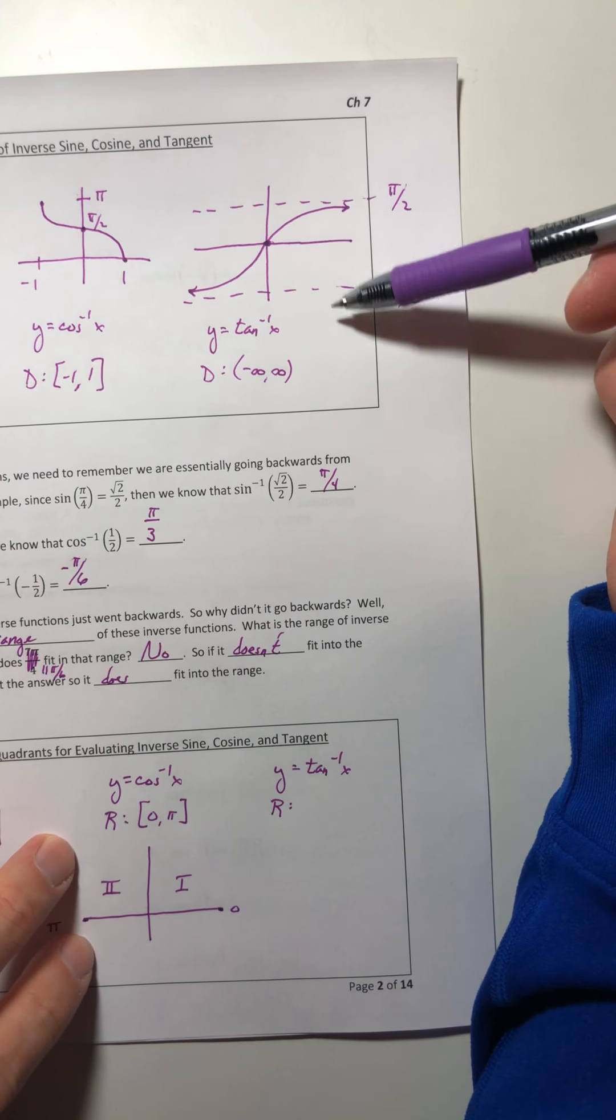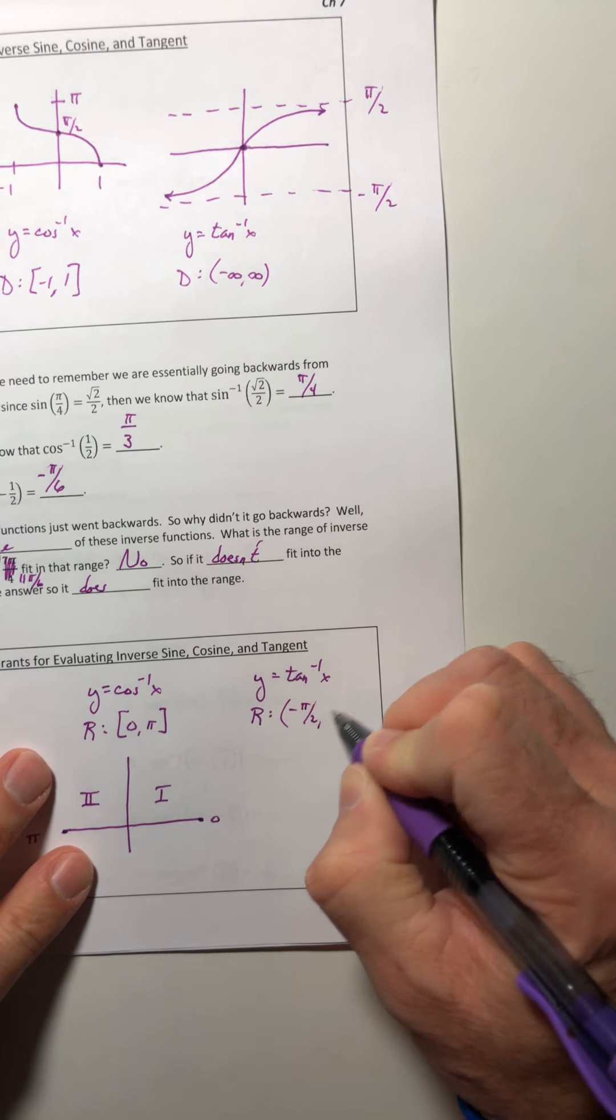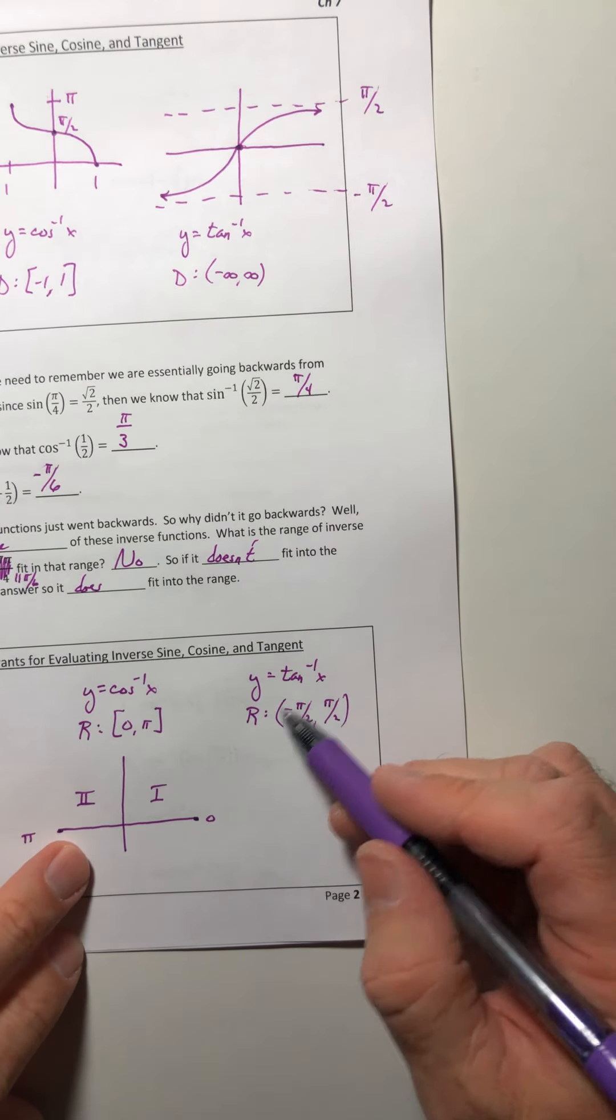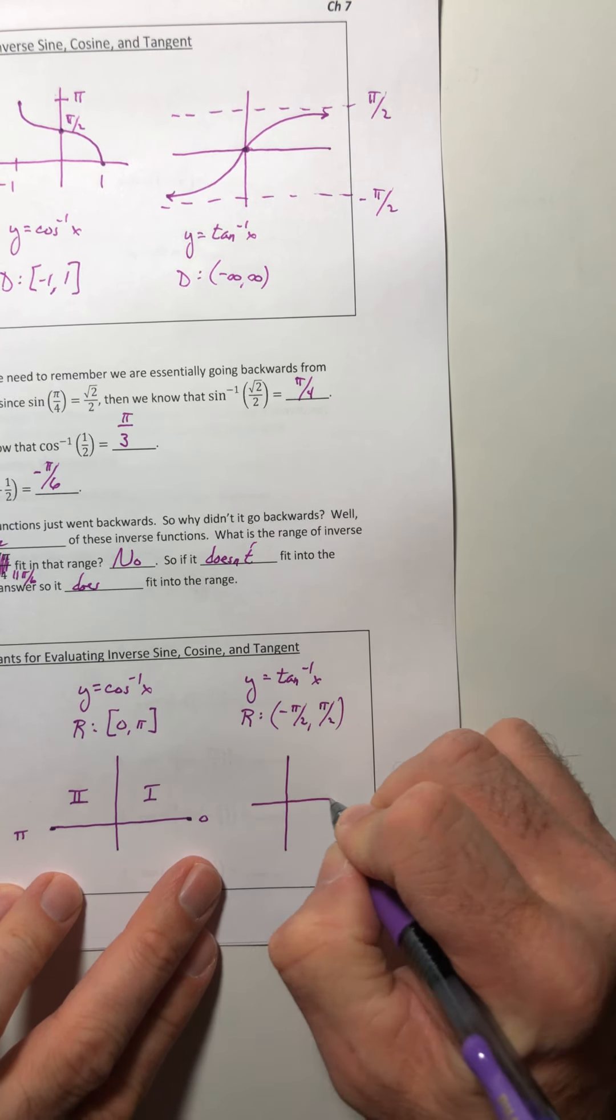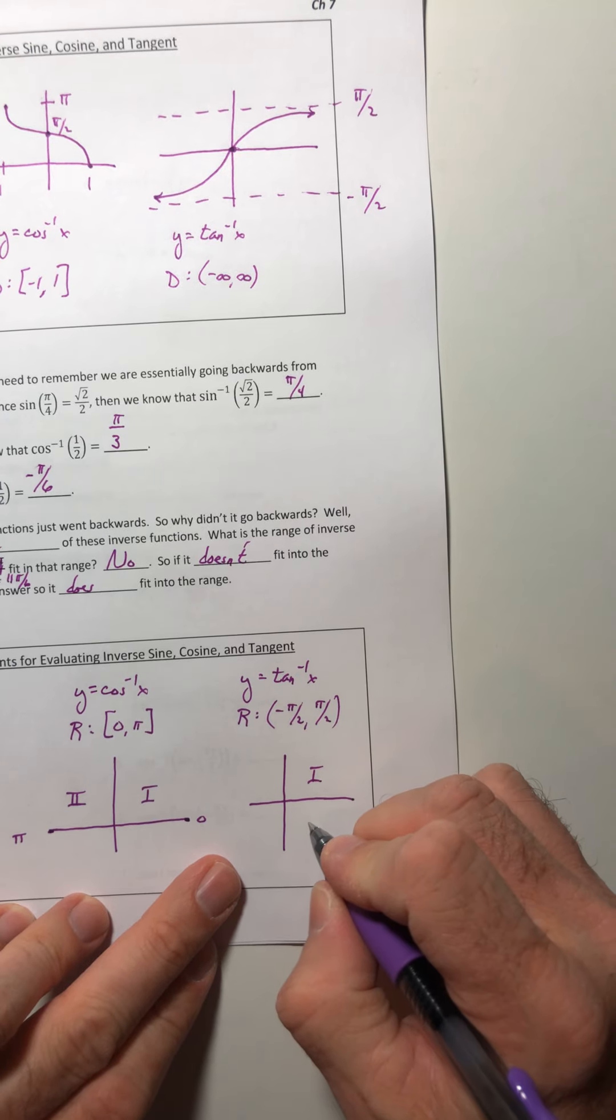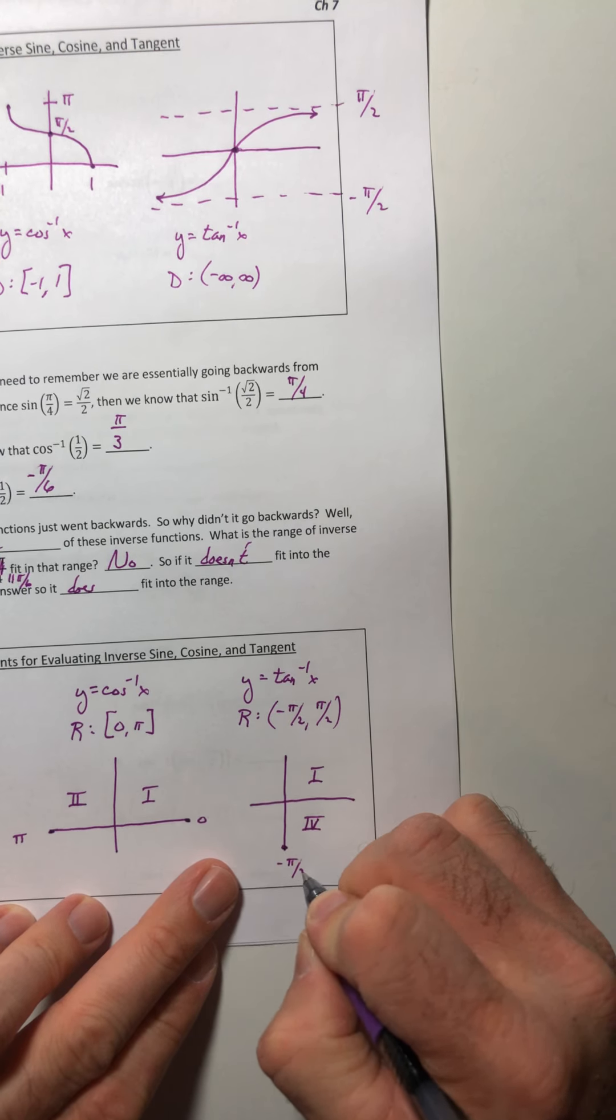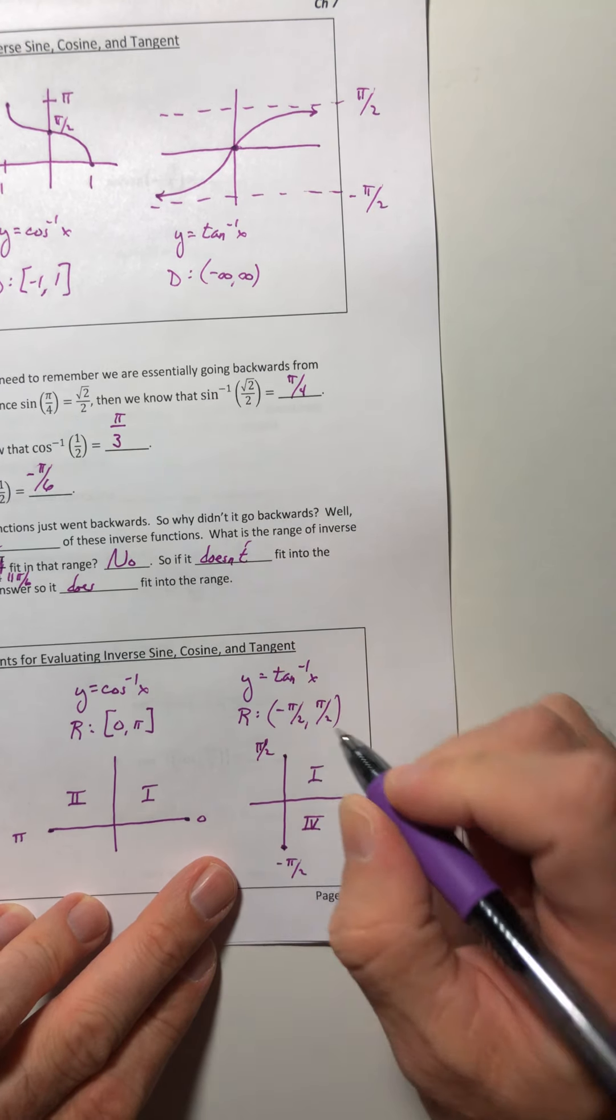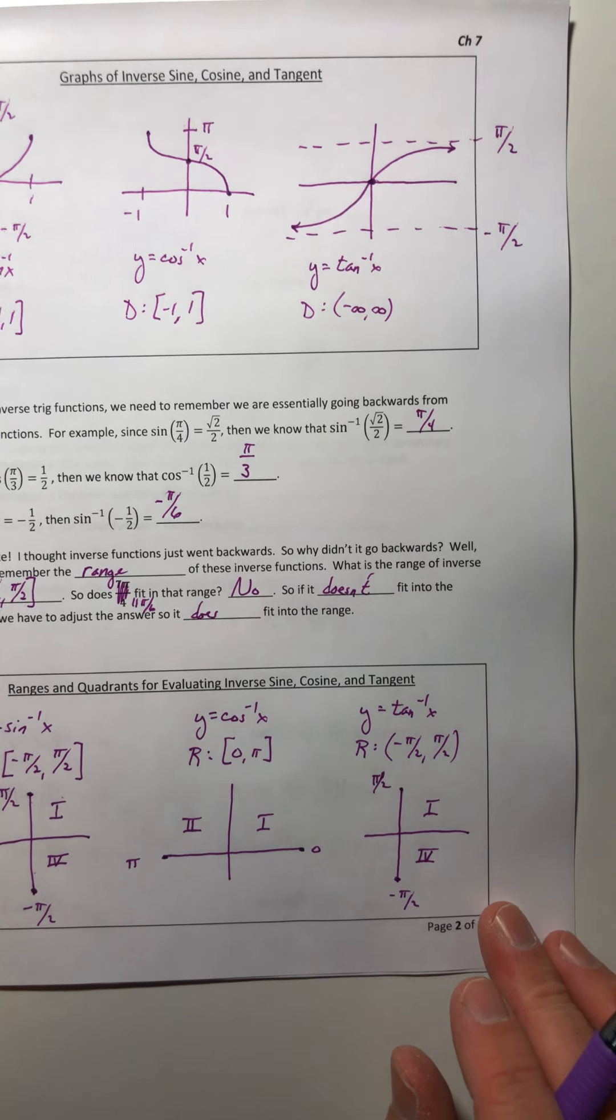And then finally the third one, inverse tangent. Its range is going to be stuck in between the two horizontal asymptotes from negative π over 2 to π over 2, but you're not actually hitting those values, so you get parentheses. So if you go back to your unit circle, that's also in quadrant one and quadrant four, because again it's negative π over 2 to π over 2, just don't include the actual endpoints.